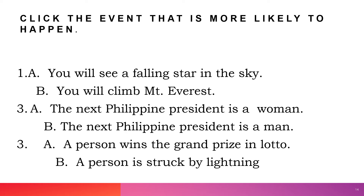Now, click the event that is more likely to happen. A: You will see a falling star in the sky, or B: You will climb Mount Everest. It is much easier to see a falling star than to climb Mount Everest. Next: the next Philippine president is a woman, or a man — we will see after five years. Third: a person wins the grand prize in Lotto, or a person is struck by lightning. Winning the grand prize in Lotto is very slim — it is more likely that a person is struck by lightning than winning the Lotto.